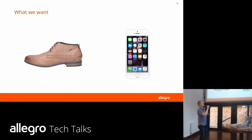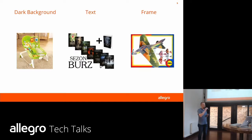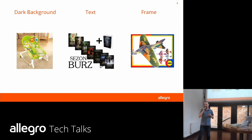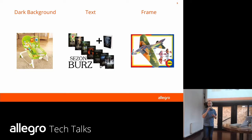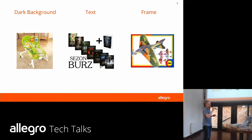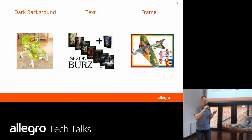Here are examples of the images we would like to have on our platform, and examples with each bad trait. On the left we see a product presented on a non-clear, non-white background. In the middle we have products surrounded with some tags and a watermark. On the right we have a product surrounded by a frame. That's our scope — we want to detect those three traits.